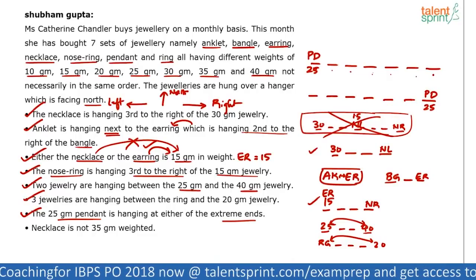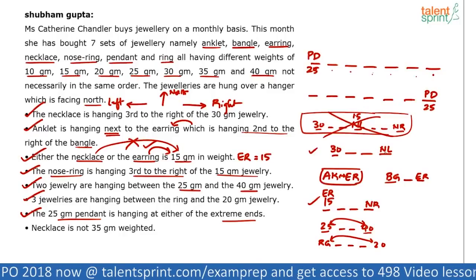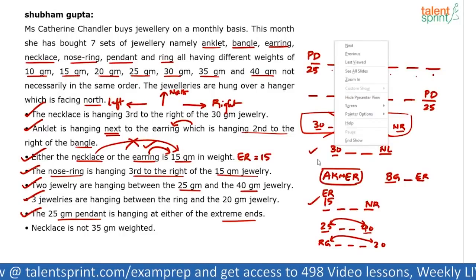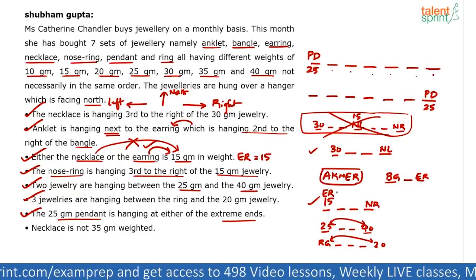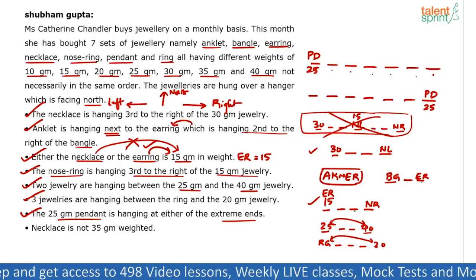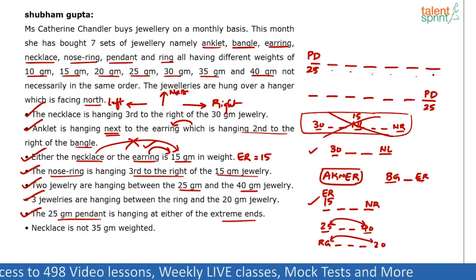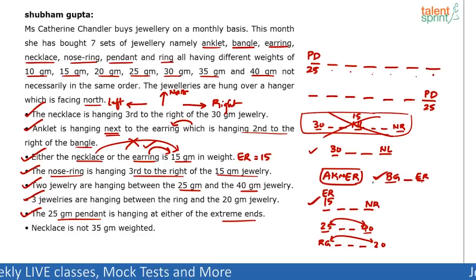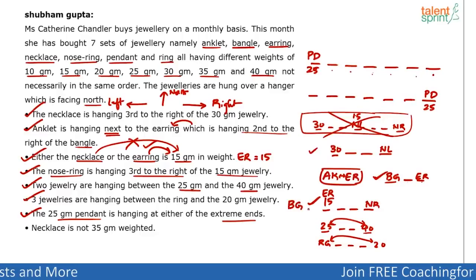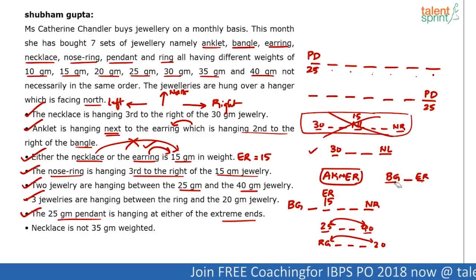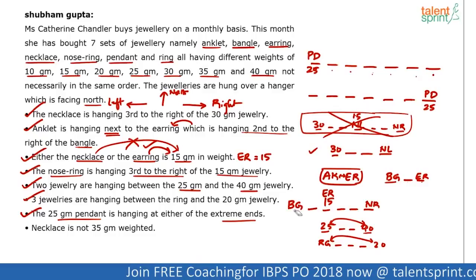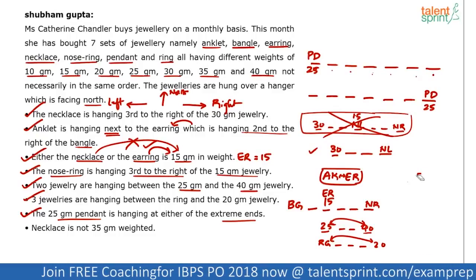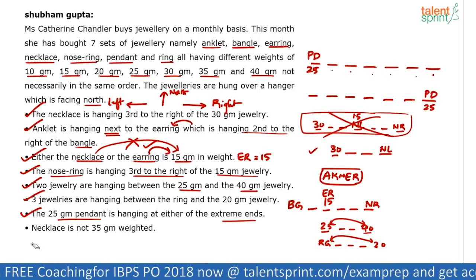Now let's connect the clues. We have BG dash ER and also ER dash dash NR. Since earring appears in both, these two can be merged. Merging gives us: BG dash ER (which is 15 grams) dash dash NR. This gives us a lot of clarity. Counting the places: this merged chain has 6 positions. Since pendant is already fixed at an extreme end, the remaining 6 positions should follow this order.